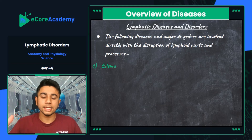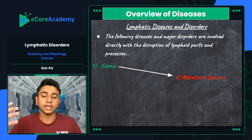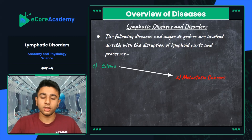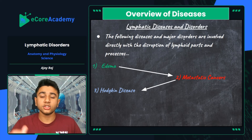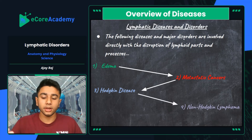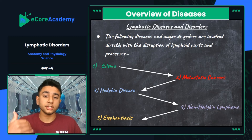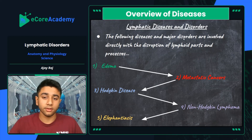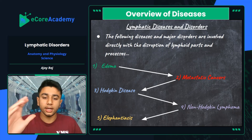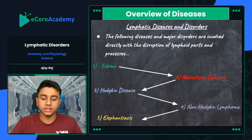Starting off, the first disease is edema — also known as common swelling — which involves interstitial fluid. Second, we have metastatic cancers, involving free-flowing cancer cells throughout the body. Third is Hodgkin's lymphoma, a specific type of lymph node cancer. Fourth is non-Hodgkin's lymphoma, a different variant. Finally, we'll look at elephantiasis, which is an extreme case of swelling and a counterpart of edema.